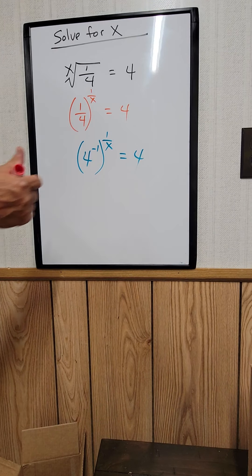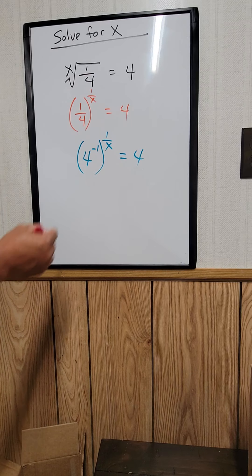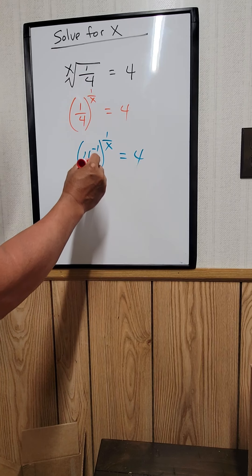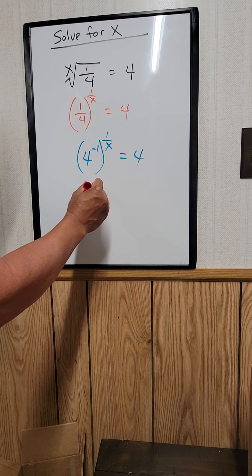Now when you have a power raised to a power, just multiply the powers basically. So this is equal to 4 to the negative 1 over x.